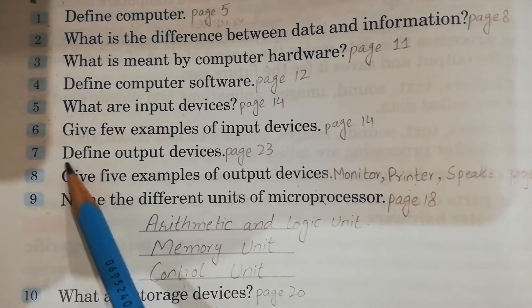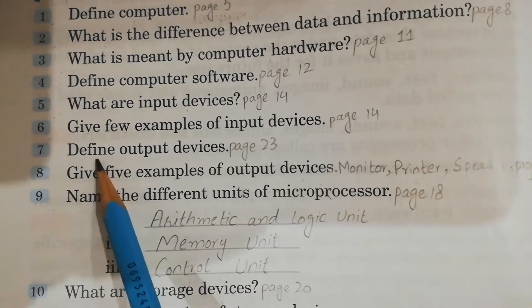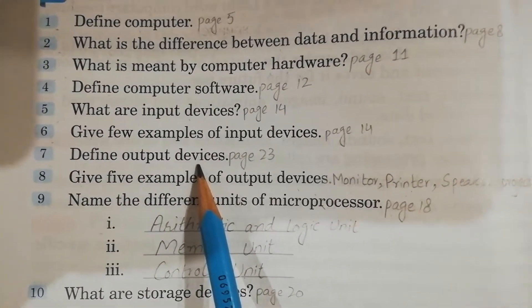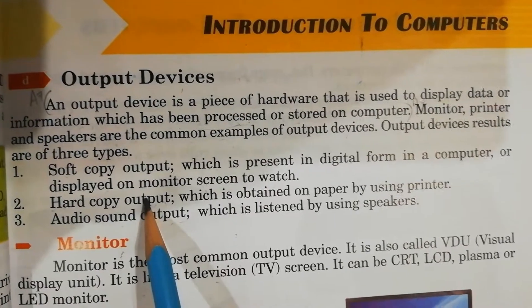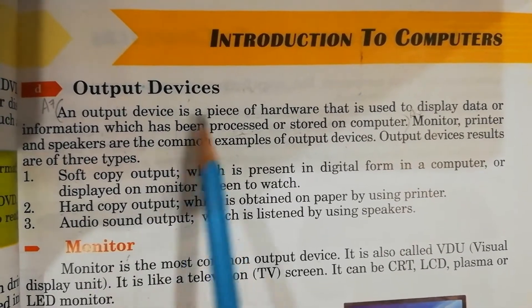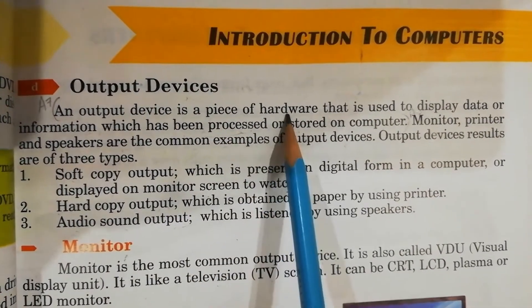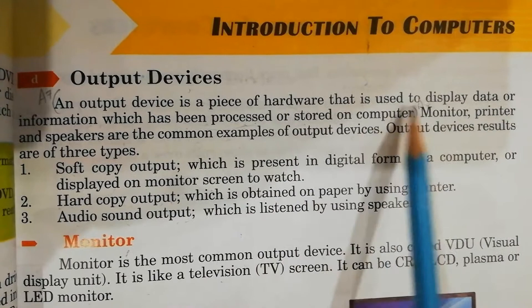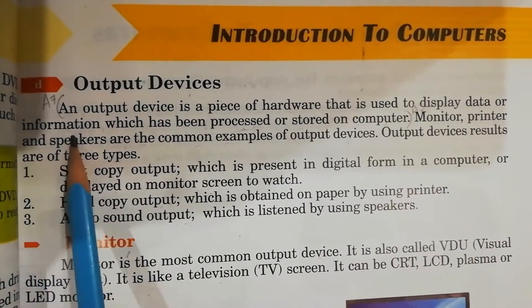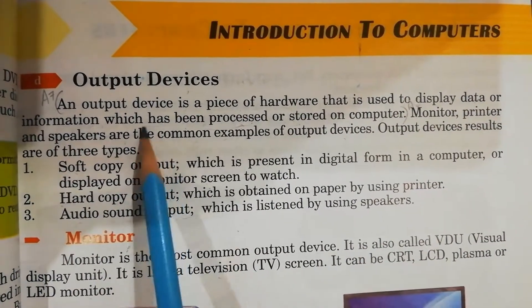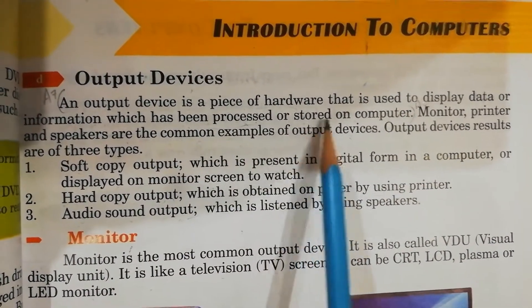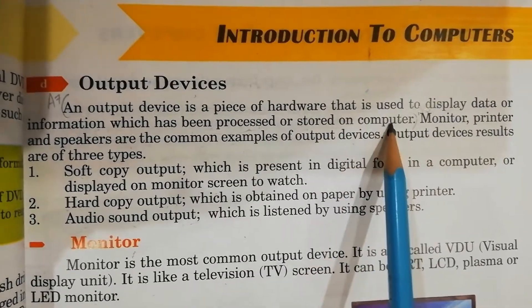Question No.7: Define Output Devices. Its answer is on page No.23. An output device is a piece of hardware that is used to display data or information which has been processed or stored on a computer.